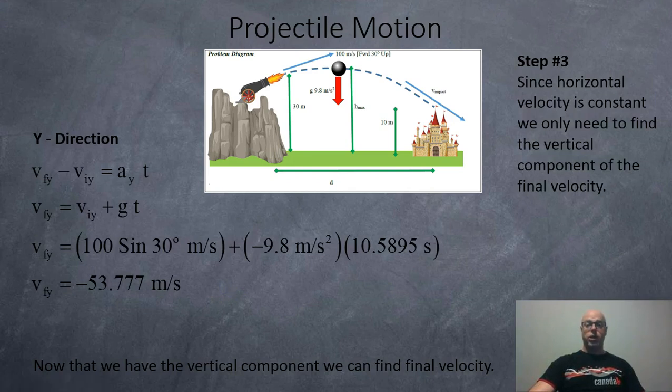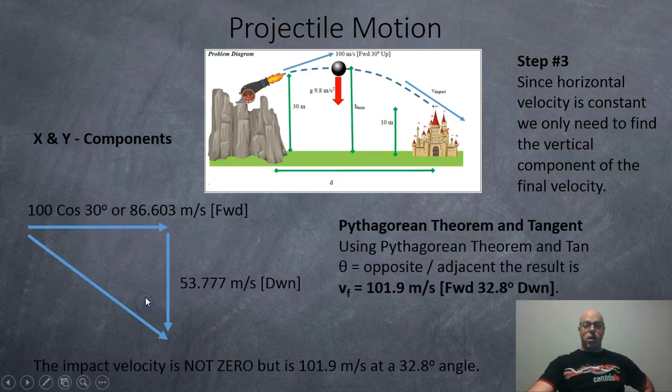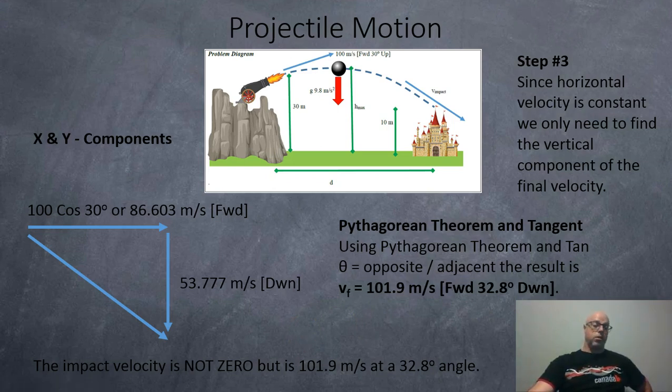Now the velocity in the x direction doesn't change, but in the y direction it does because gravity is acting vertically. So we can use vfy minus viy equals ay t, which rearranged is vfy equals viy plus g t, and g being negative 9.8. So when we plug in our numbers, 100 sine 30 for the initial velocity up, the acceleration down of negative 9.8 times the time, the ball is coming down at negative 53.777 meters per second. The impact velocity is non-zero. It's zero shortly after impact, but not at impact. Otherwise, it wouldn't hurt. It wouldn't do any damage.